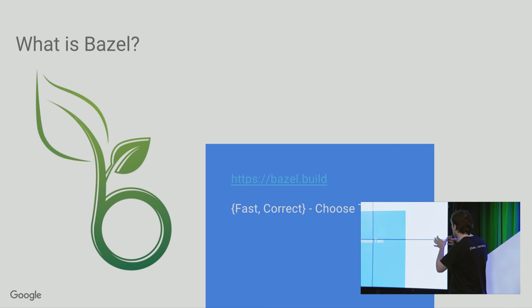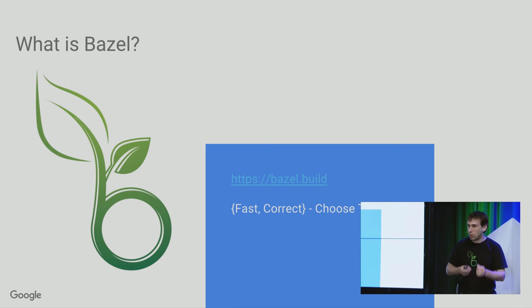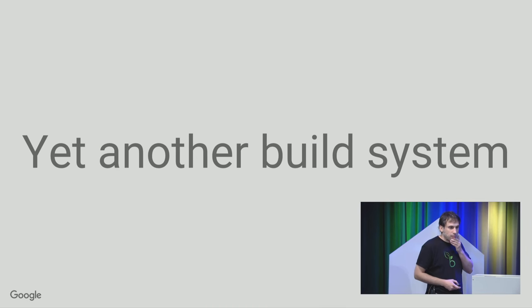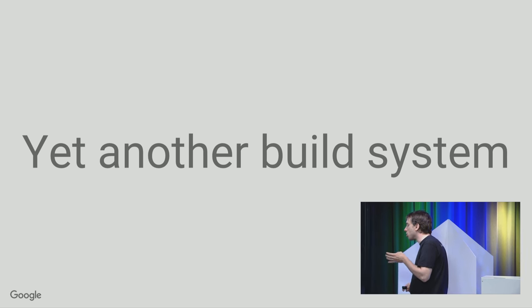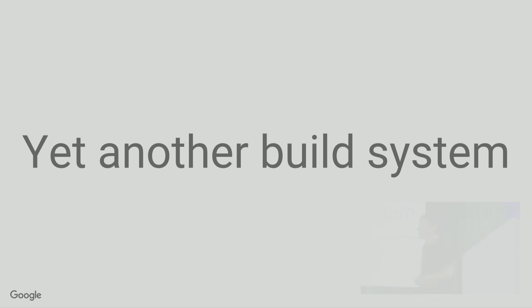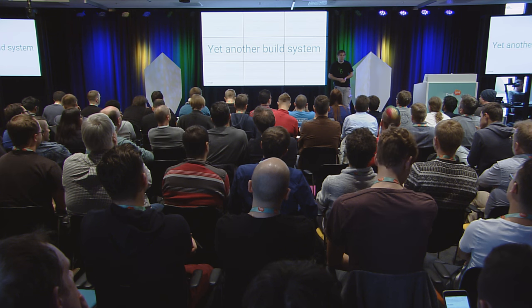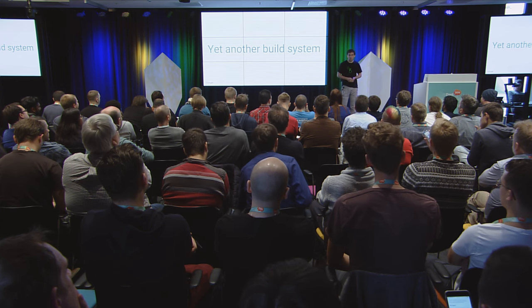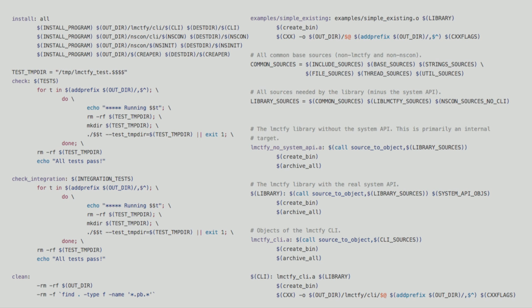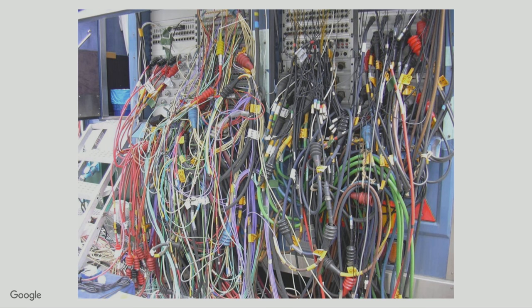The basic goal for Bazel is we want a build system that is fast and correct. A question you might ask is, why did Google develop yet another build system? So back in 2006, Google was using makefiles — actually a generator to make files. And the problem with that is, have you seen a makefile? That is a very clean makefile from an open source project. And it's really difficult to read. It has a lot of problems.